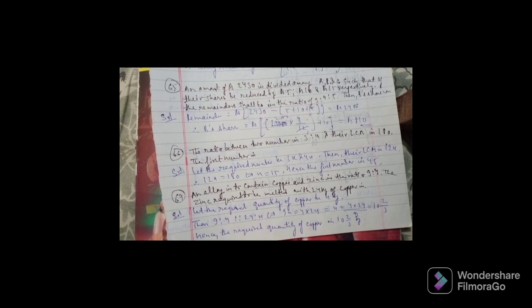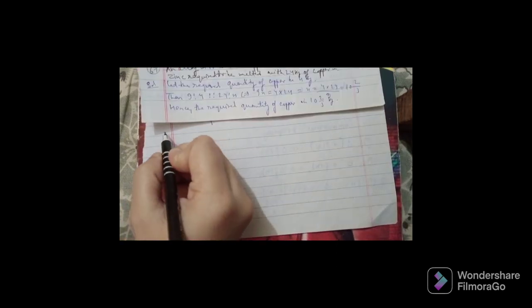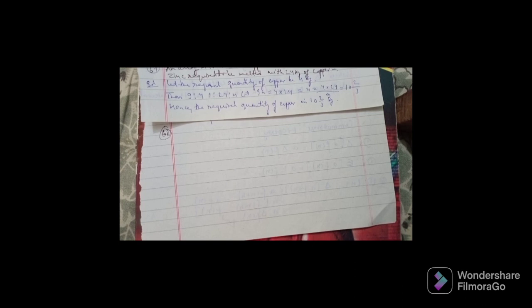The 68th question: 60 kg of alloy A is mixed with 100 kg of alloy B. Alloy A has lead to tin in the ratio 3:2, and alloy B has tin and copper in the ratio 1:4. The amount of tin in the new alloy is — options: 36 kg, 44 kg, 53 kg, and 80 kg.